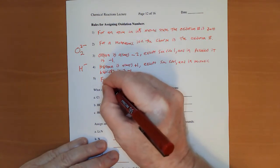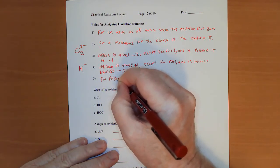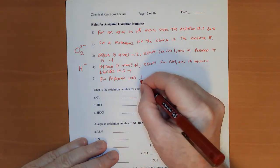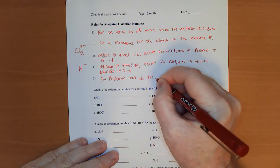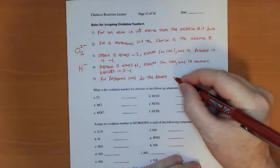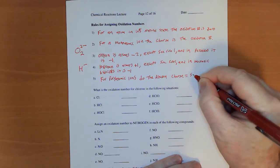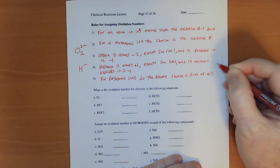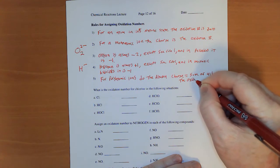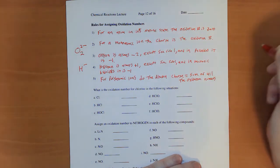And for polyatomic ions, you have to do the algebra. Their charge equals the sum of all the oxidation numbers.